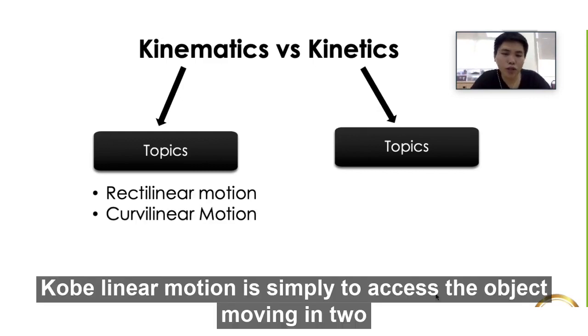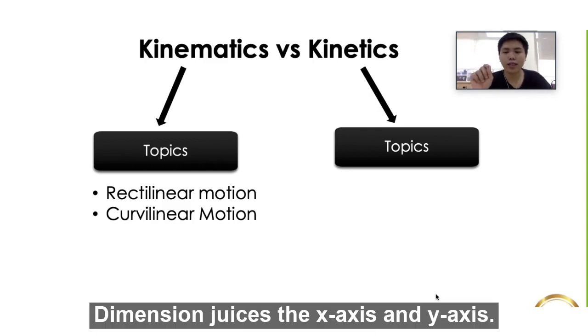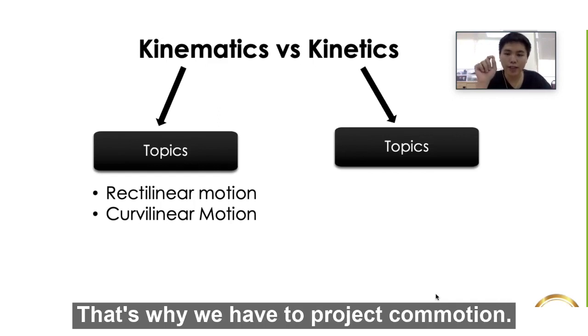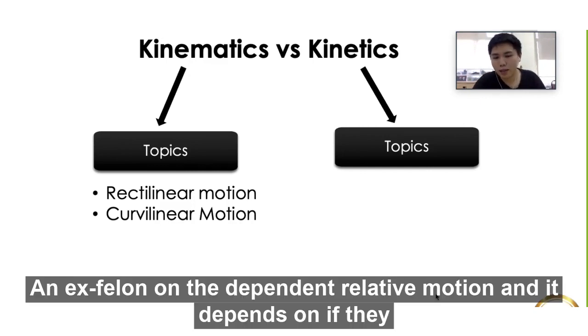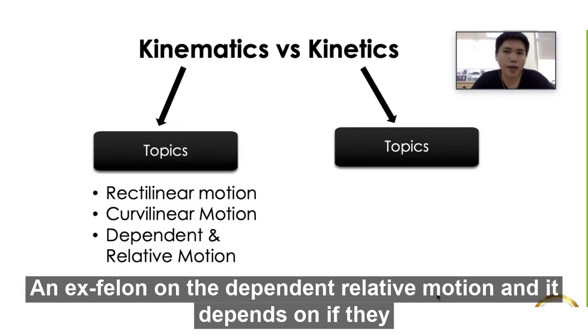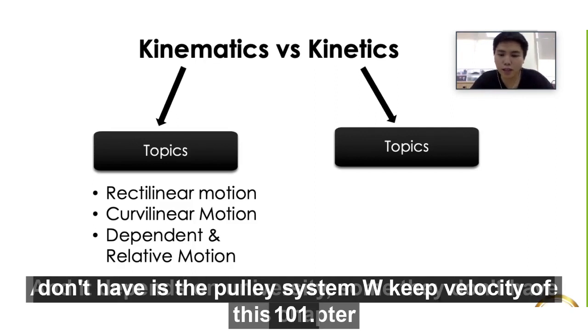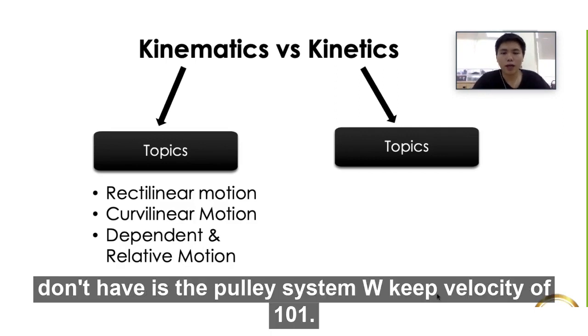Curvilinear motion is simply two axes - the object moving in two dimensions, which is the x-axis and the y-axis. That's why we have the projectile motion. Next we learn on the dependent and relative motion. Depending on the university, some don't have this chapter. It is on the pulley system - the relative velocity of one will affect the other one.